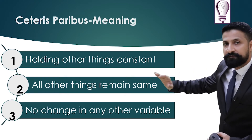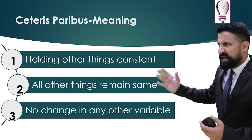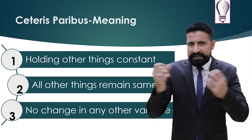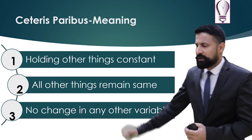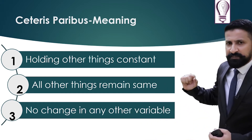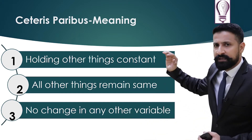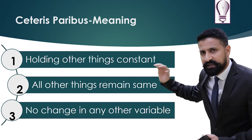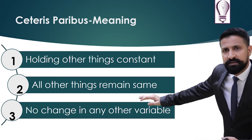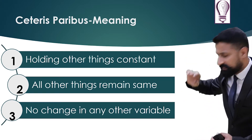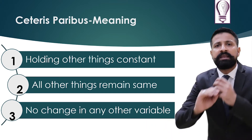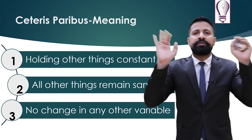Here are the three meanings of ceteris paribus — the most common meanings. The first meaning is: holding other things constant. The second is: all other things remain the same. And the third is: no change in any other variable.